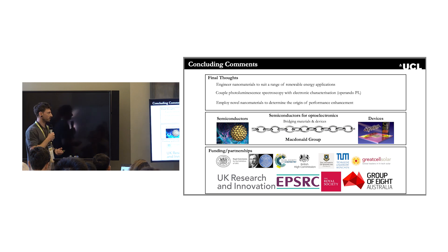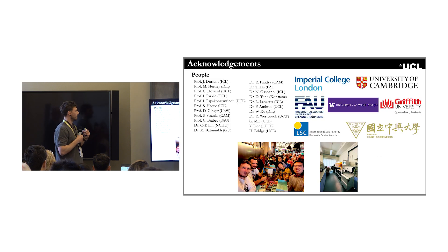So we engineer nanomaterials to see a range of renewable energy applications. We couple photoluminescence spectroscopy with electronics to be able to learn more about charge extraction. This is operando PL. We then employ novel nanomaterials to discover the origin of performance enhancement. This is with the hope that we can learn a little bit more about how devices operate and how we can make them better to, in turn, make things like much more efficient modules. I'll acknowledge everybody on the slide and thank you for your attention. It's been a great event, and thank you to all the admin staff for all your hard work in organizing it.